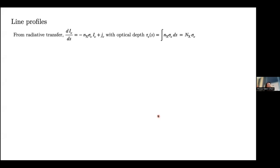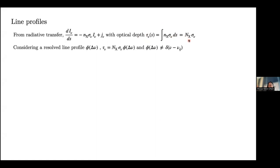The favorite equation in the ISM is radiative transfer. The two terms on the right capture absorption and emission. In the case of absorption, the total opacity goes with integrated column density multiplied by the cross section of absorption or ionization. The opacity is frequency-dependent, and the line profile phi is not a delta function, thanks to modern physics. The question is: what makes it non-delta? What are the line broadening mechanisms?